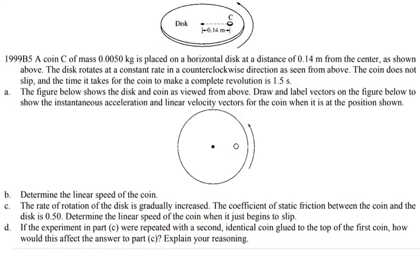Here's AP Physics B 1999 FRQ. Question: A coin C of mass 0.0050 kg (or 5 grams) is placed on a horizontal disk at a distance of 0.14 meters (or 14 centimeters) from the center, as shown above.